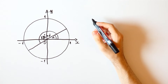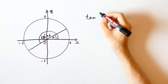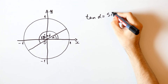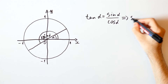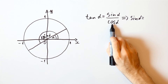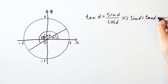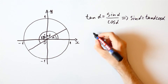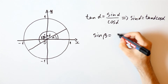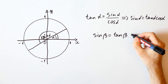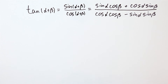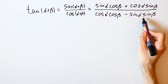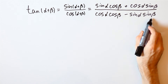It turns out that it doesn't matter, because we can use the following. Since the tangent of alpha is equal to the sine of alpha over the cosine of alpha, we can say that the sine of alpha is equal to the tangent of alpha times the cosine of alpha. And that will also be true for angle beta, which means that the sine of beta is equal to the tangent of beta times the cosine of beta. Now in this expression, instead of the sine of alpha and the sine of beta, we write them as the tangent times the cosine.